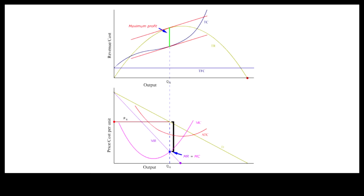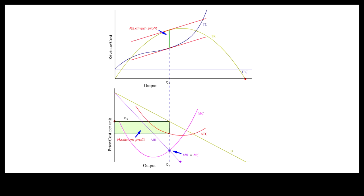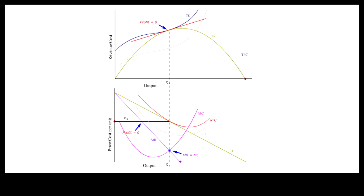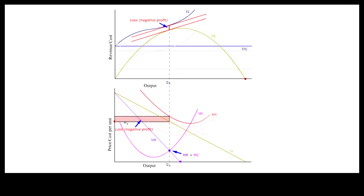But P greater than MC does not guarantee positive profit. Positive profit depends on the relative position of ATC to the demand curve. If ATC is low compared to price, there could be positive profit. When ATC is high compared to price, due to higher fixed costs, for example, the same demand condition can result in zero profit or negative profit.